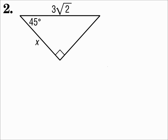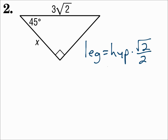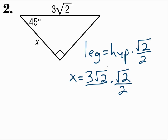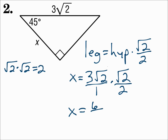Number 2. Here we have a 45-45-90 triangle. The leg is x and the hypotenuse is 3 square root of 2. Since we're looking for the leg, use the leg equals formula: leg equals hypotenuse times the square root of 2 over 2. Substituting: the leg is x and the hypotenuse is 3 square root of 2, so x equals 3√2 times √2 over 2. It helps to put 3√2 over 1 and multiply fractions. Remember that the square root of 2 times the square root of 2 equals 2, so the numerator is 3 times 2 which is 6, and the denominator is 1 times 2 which is 2. So x equals 3.